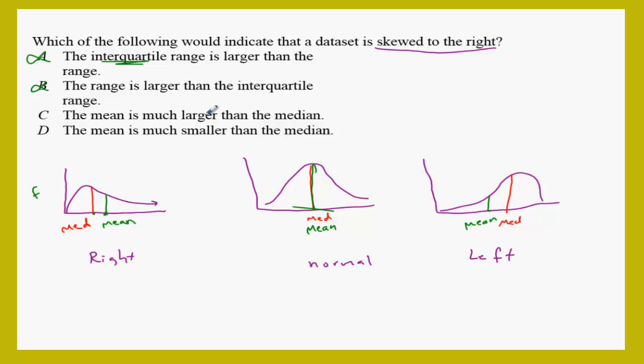The mean is much larger than the median. The mean is larger than the median, that is right. The mean is much smaller than the median, that's the left skewed. So choice C is the correct choice. Work well.